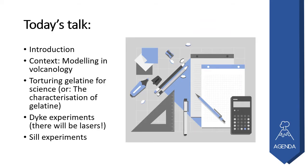So first of all, let's have a look at the agenda for today's talk. We're going to start off with some introduction, a little bit of context into what modeling is like, especially in volcanology. Then we're going to have a look at how I tortured jelly for science — or the more scientific way of putting it, the characterization of gelatin as an analog material. Then we'll have a look at some dike experiments, and there will be lasers. And if time permits, we will discuss a few of the sill experiments as well.